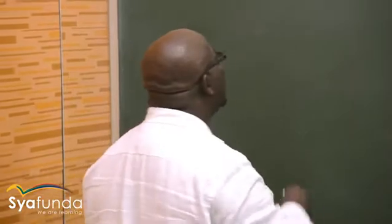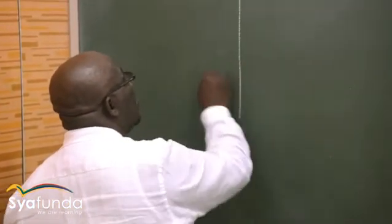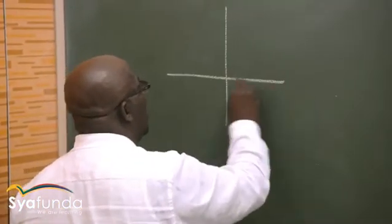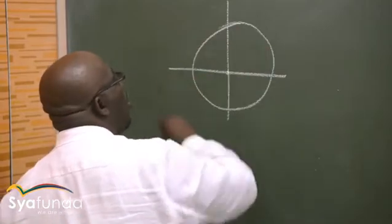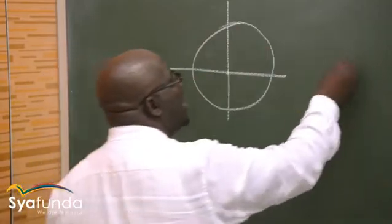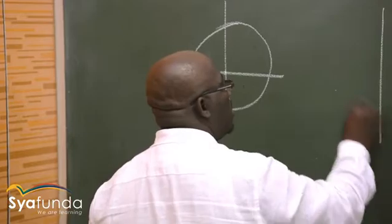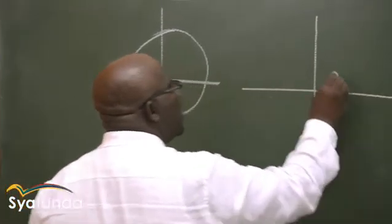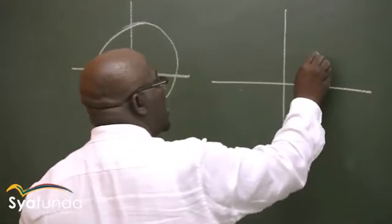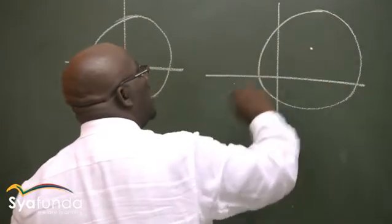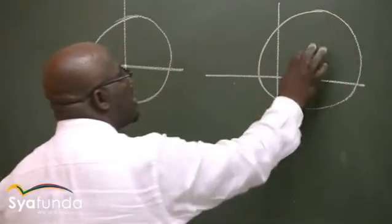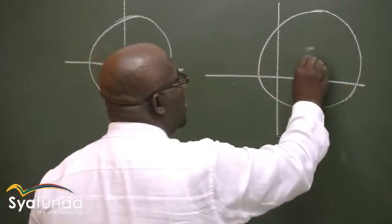Then there's a part that deals with circles. We can have a circle at the origin, with the center at the origin. Or we might find a circle with a center which is not at the origin. These are the two types of circles - one where the center is at the origin, and one where it is not.